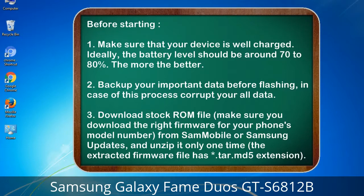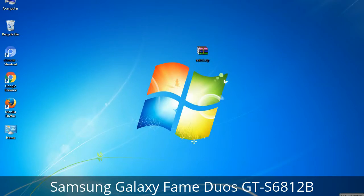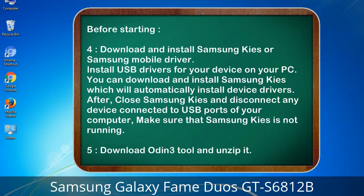3. Download the stock ROM file. Make sure you download the right firmware for your phone's model number from Sammobile or Samsung Updates, and unzip it only one time. The extracted firmware file has a *.tar.md5 extension. 4. Download and install Samsung Kies or Samsung mobile driver to install USB drivers for your device on your PC. You can download and install Samsung Kies which will automatically install device drivers.